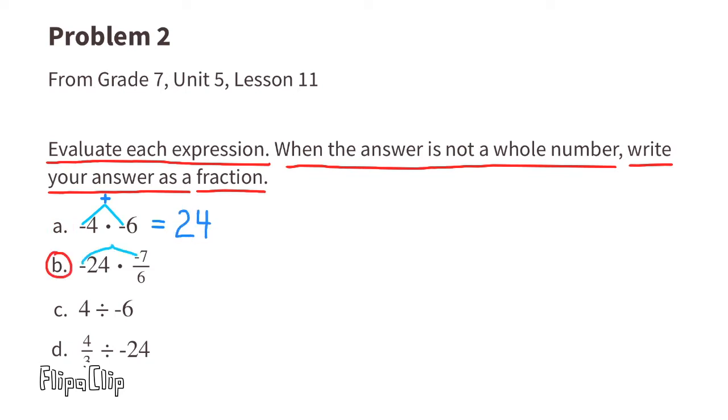Part b: This is a negative times a negative, so we know the answer is going to be a positive. We can rewrite it as 24 over 1 times 7 over 6. There's some cross canceling we can do: 6 goes into 6 once, and 6 goes into 24 four times. Now multiply straight across: 4 times 7 is 28, 1 times 1 is 1. 28 divided by 1 is 28.